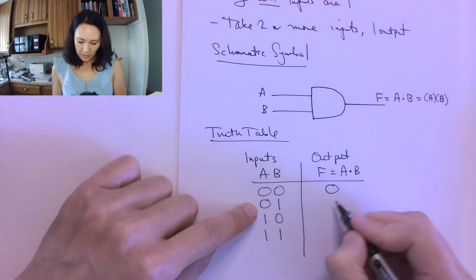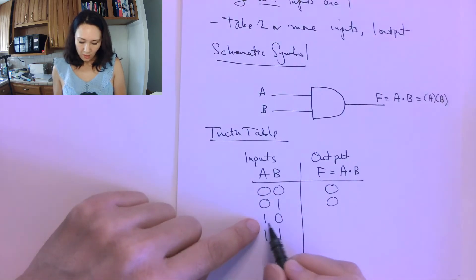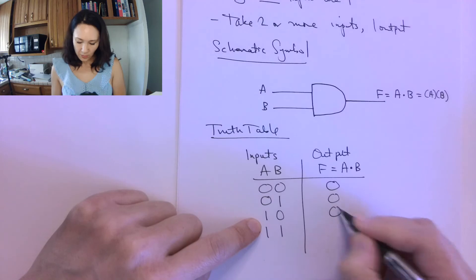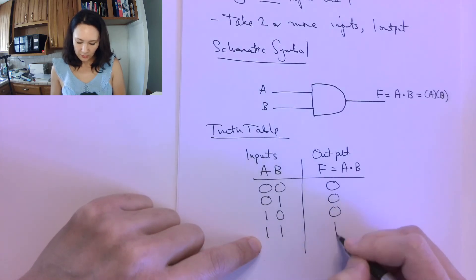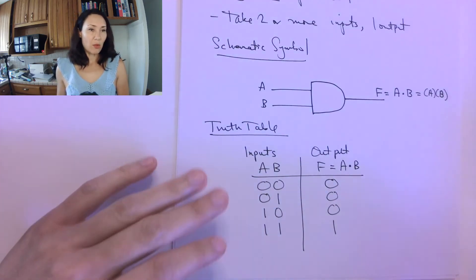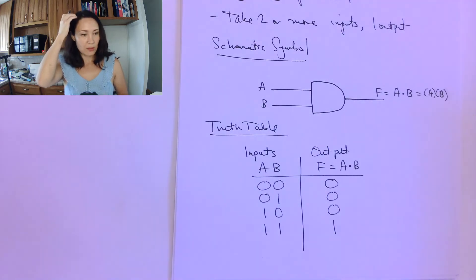So A and B is 0, 1 and 0 is 0, and then 1 and 1 is 1. So here's the truth table for the 2 input AND gate.